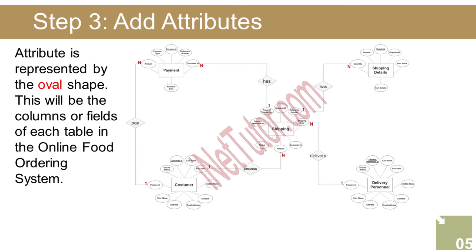Step 3: Add attributes. This will be the columns or fields of each table in the shipping management system. The customer entity has the following attributes: Customer_ID (primary key, represented with underline), last name, first name, middle name, contact, email address, address, username, password, and account status. The shipping entity has: Shipping_ID (primary key), reference number, shipping date, Customer_ID (foreign key), amount, status, Delivery_Personnel_ID (foreign key), and proof of transaction. The shipping details entity has: Details_ID (primary key), Shipping_ID (foreign key), item name, item details, quantity, and amount.